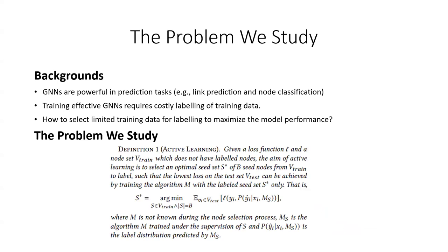GNNs are very powerful in prediction tasks. However, training effective GNNs requires the labeling of a large number of training data, which is very expensive. An important research question is how to select limited training data for labeling to maximize the model performance.